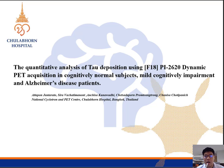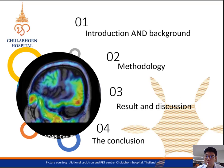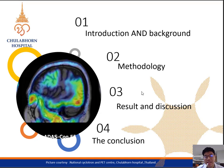Today I will present the main topic from my research. My research is the quantitative analysis of tau deposition using F18-PI2620 dynamic PET acquisition in cognitively normal subjects, mild cognitively impaired, and Alzheimer's disease patients. This presentation is divided into four sections, focusing on the technical and dynamic data and technical aspects of imaging analysis.